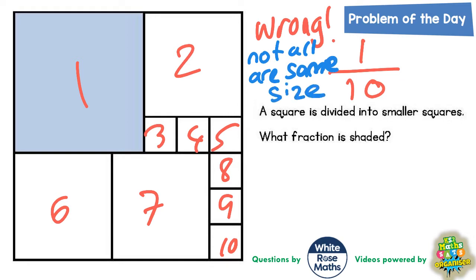And they're clearly not because we've got one big square, three medium squares and six small squares. So we can't do that.